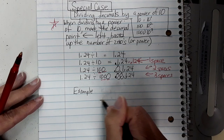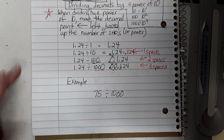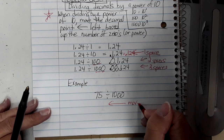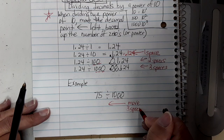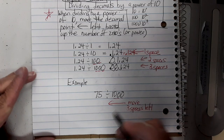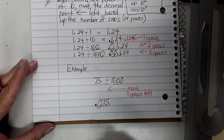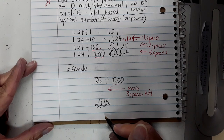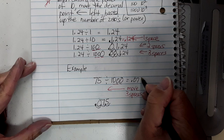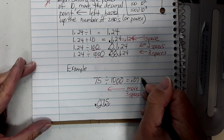Let's try another example: take seventy-five and divide it by a thousand. Instead of dividing it out, just move the decimal point three spaces left. Seventy-five is a whole number so the decimal point is assumed to be at the end. Move it once, twice, three spaces — we get zero point zero seven five, which is seventy-five thousandths. That's how we divide decimals with a whole number.